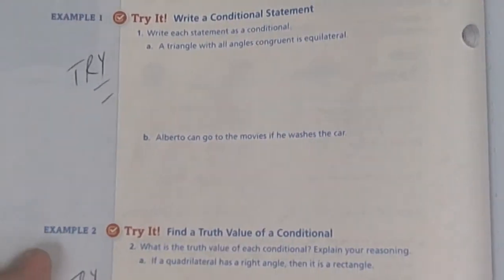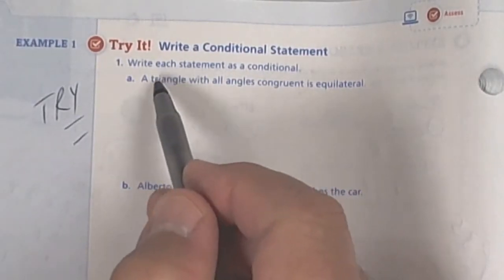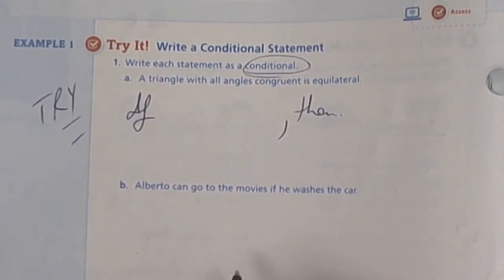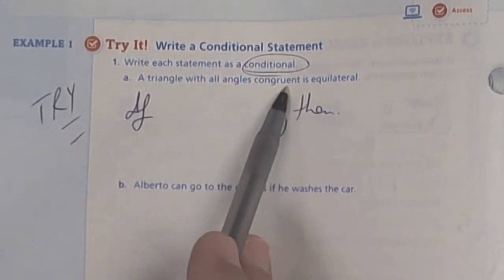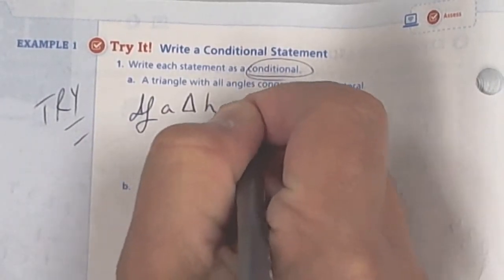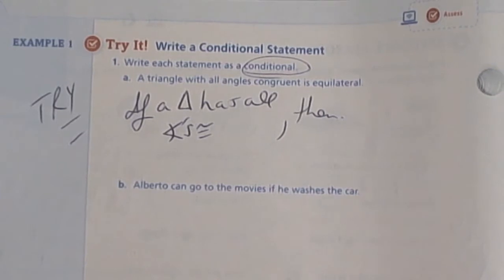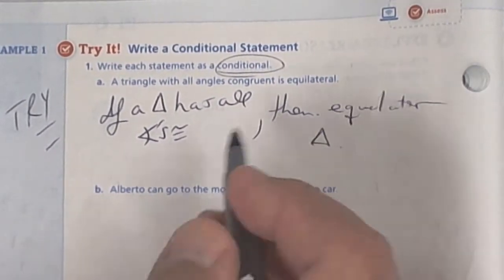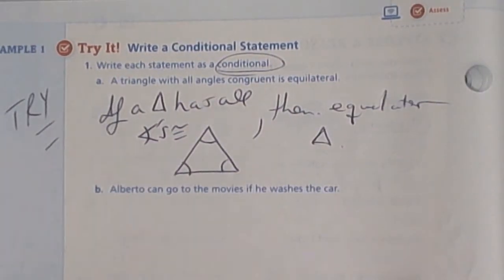Alright let's go to the next page here. I'm on page 36 right now and I want you to try this one up here. We're going to try it together as a matter of fact. It says write each statement as a conditional. So that means if something then something. If then. So if a triangle has all angles congruent or equal then it is an equilateral triangle. So then equilateral triangle. Well that's true. So if you take a triangle if this angle is equal to this one and it's equal to this one, then it's called an equilateral triangle. So that is a true statement.